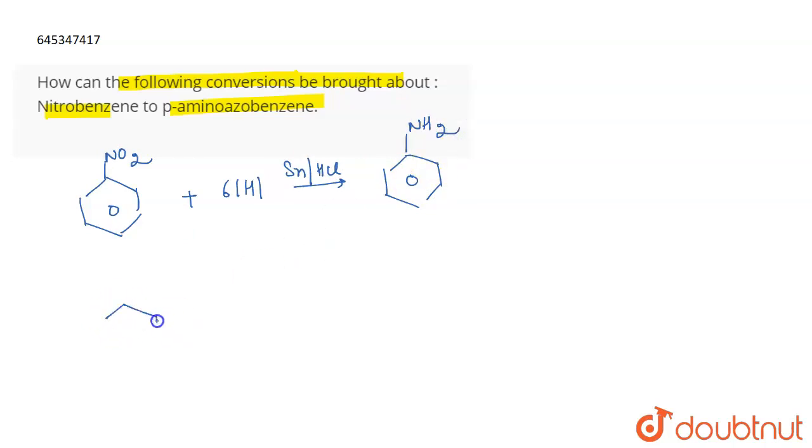Now when this aniline reacts with benzene diazonium chloride, which is N2+ Cl-, I'm writing it here. To make the understanding easier, we can write this NH as NHH.